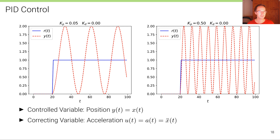On the right, you can see what happens if we take the same proportional controller but increase the proportional gain parameter from 0.05 to 0.5. In this case, the oscillation becomes faster, but we still have the oscillating behavior and never actually reach a steady state where the reference value is maintained. This illustrates the problem with just using a proportional controller.